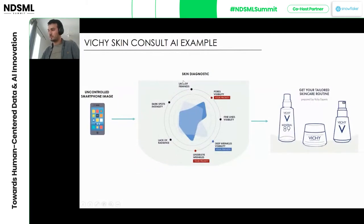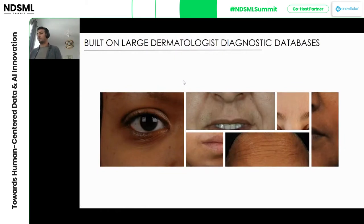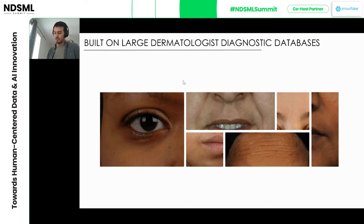What I'm going to talk about today is how you actually perform this kind of diagnostic. Usually this is based on specific algorithms tailored to each product category. For this skin case, we use a lot of dermatologist diagnostic databases that help us build algorithms that know how to assess these clinical signs of aging and skin condition.